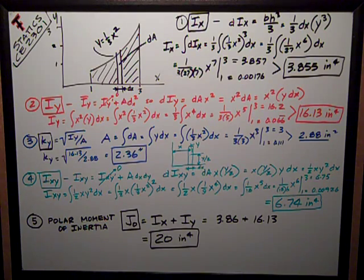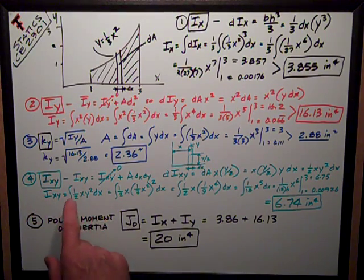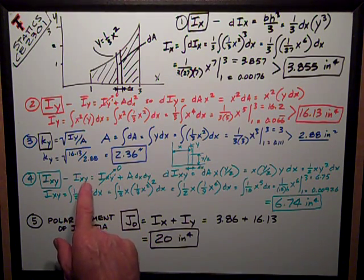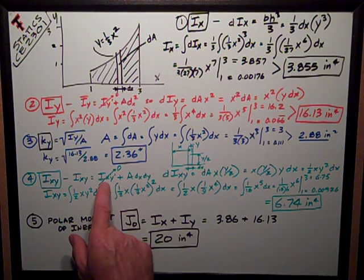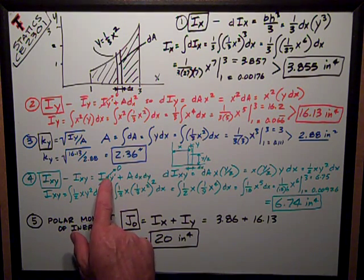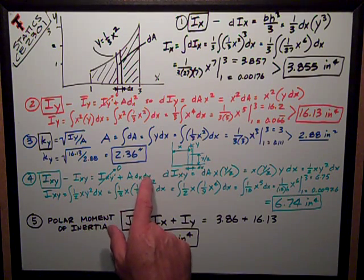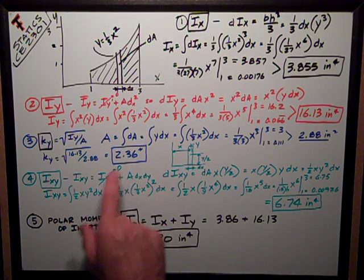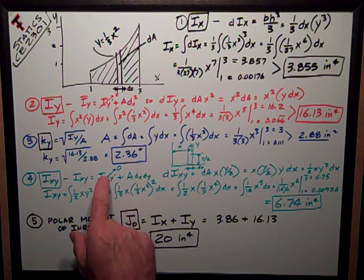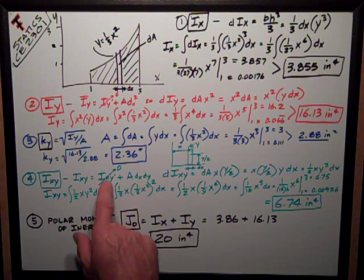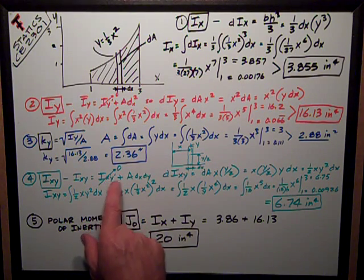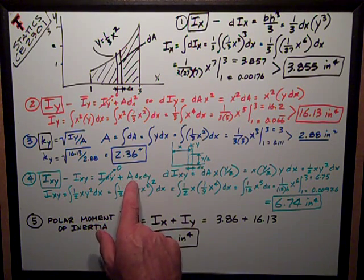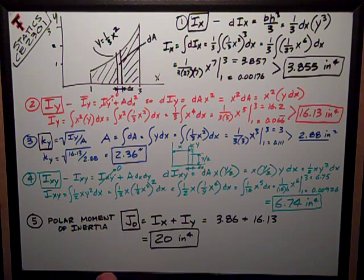Number four, the product of inertia about the x and y-axis. Once again, I'm going to remember the parallel axis theorem. Ixy equals the centroidal product of inertia, Ix'y', plus A dx dy. In this case, any time I have an axis of symmetry, even just one of them, the product of inertia goes to 0. So this term goes to 0, and I've got my area times my dx and dy distances.